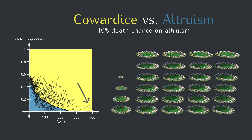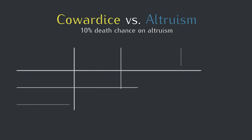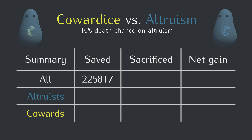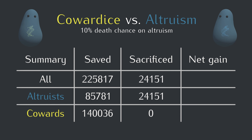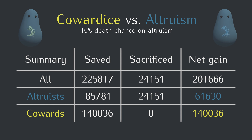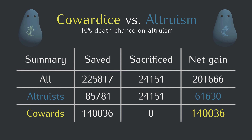Why did this version of altruism fail? Since this is a computer simulation, we have a perfect record. There were 225,817 blobs saved by warning calls — 85,781 had the altruism allele, and the other 140,036 had the cowardly allele. And 24,151 of the altruistic blobs died after giving the warning. Overall, the altruistic allele saved a net total of 61,630 copies of the altruism allele, which is good. But since the total population size is limited by the predators, the total number saved isn't really what matters. A successful allele for altruism would need to find a way to help itself more than it helps its competitor.